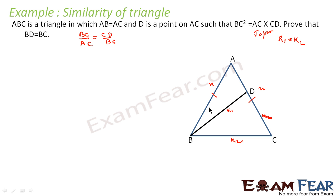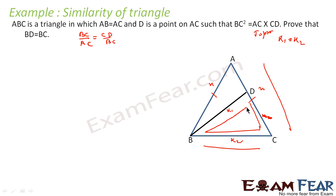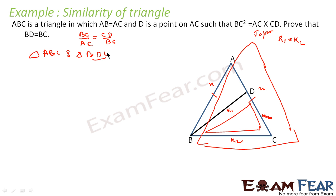So it looks like from this we can prove that a pair of triangles is similar. From this, which pair should we take? You see the side BC — BC by AC forms the bigger triangle. If you join BC and AC you get the bigger triangle. CD by BC — CD and BC form a smaller triangle. So we have got two triangles: one big triangle ABC and one smaller triangle. We'll try to prove them similar since sides are proportional, and we'll find one angle common.